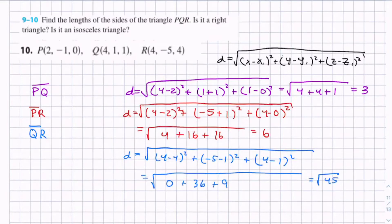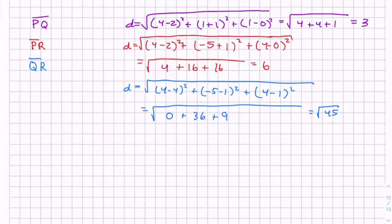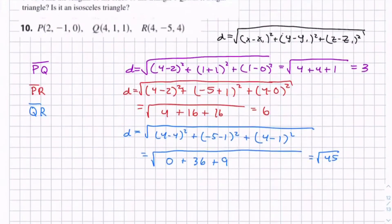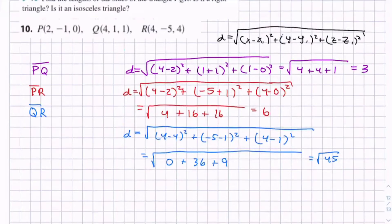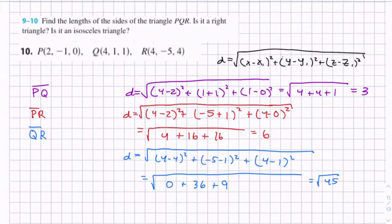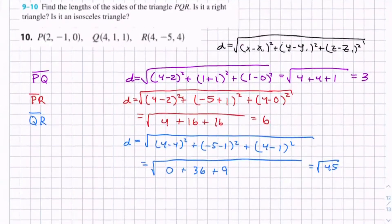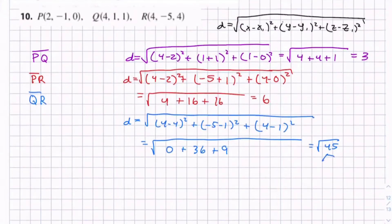We can simplify this, but let's just keep it in this form, which might make it easier when we try to prove it's isosceles or a right triangle. Or actually, let's simplify it first. This equals 3√5.